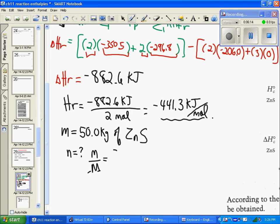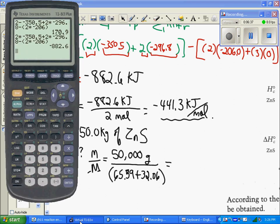Our mass of zinc sulfide was 50,000 grams, 50 kilograms. And the molar mass of zinc sulfide is a zinc, which is 65.39 grams per mole, and a sulfur, which is 32.06 grams per mole. So we'll bring up our calculator again and take 50,000, divide by 65.39 and 32.06. That gives us 513 moles.